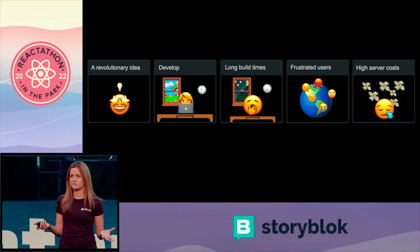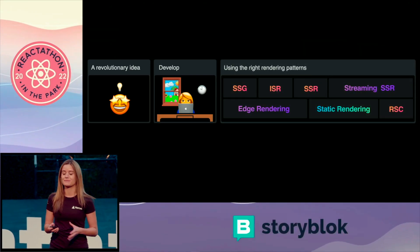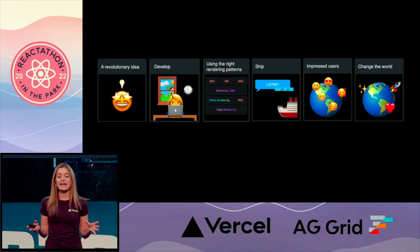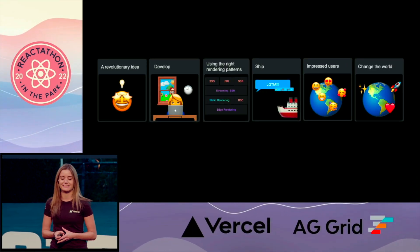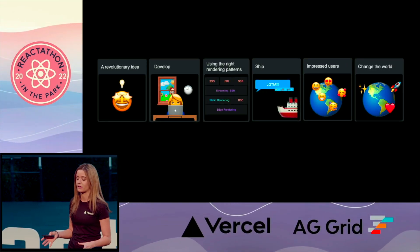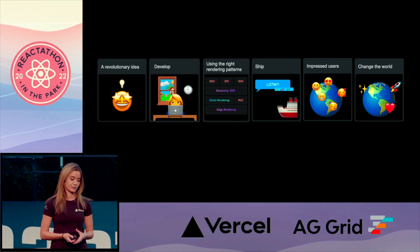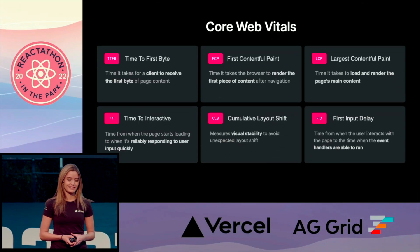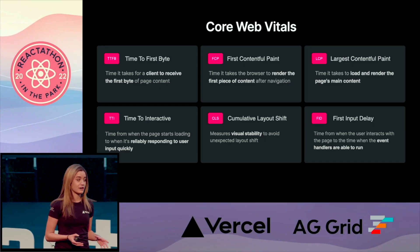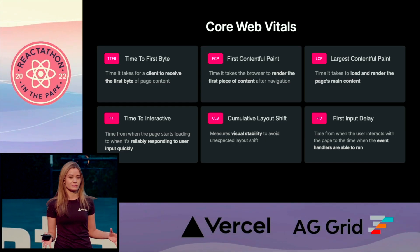So what can we do about this? We have to start implementing the right rendering patterns. Knowing how to apply these techniques can massively improve your app's performance, giving you a great product to share with the world. Now, usually when we talk about web performance, we talk about optimizing for the core web vitals.